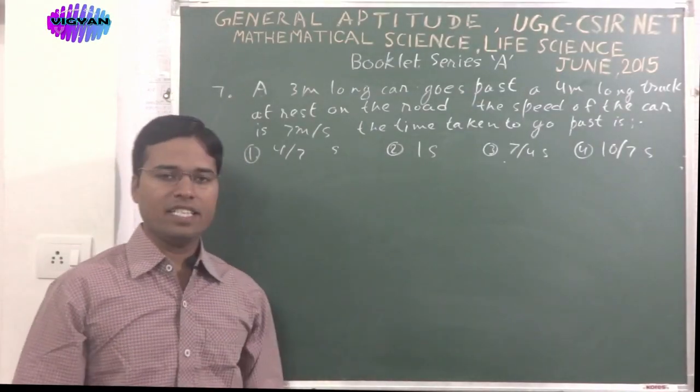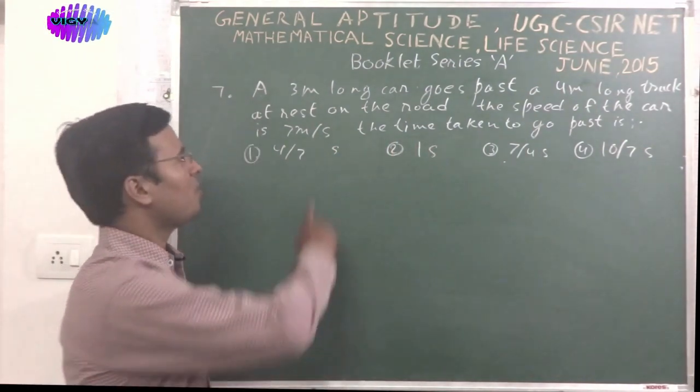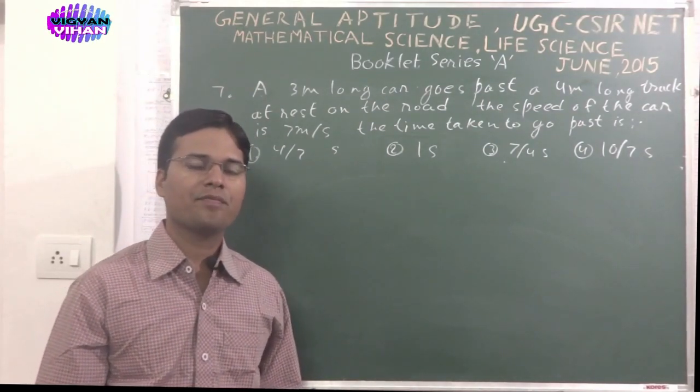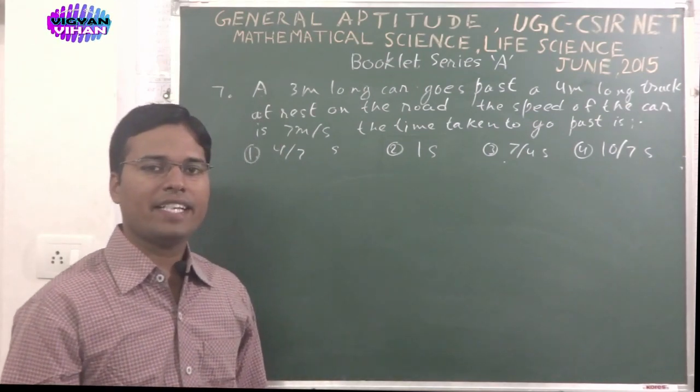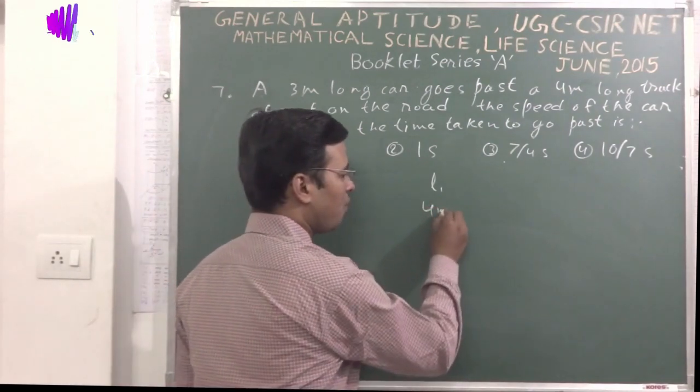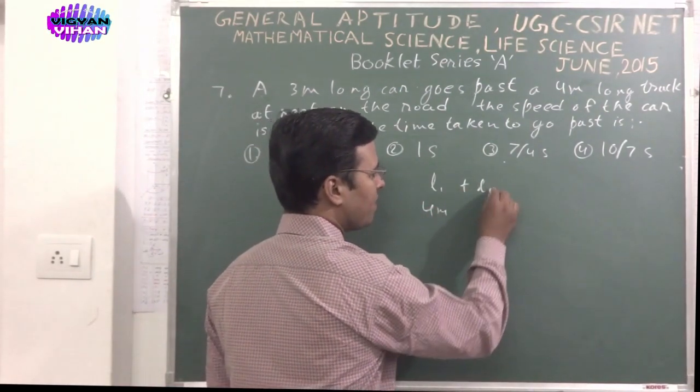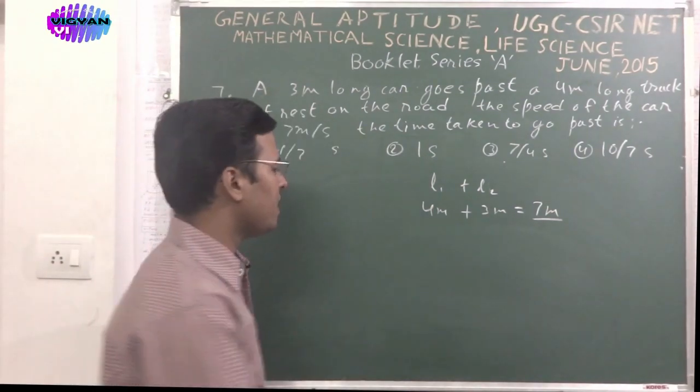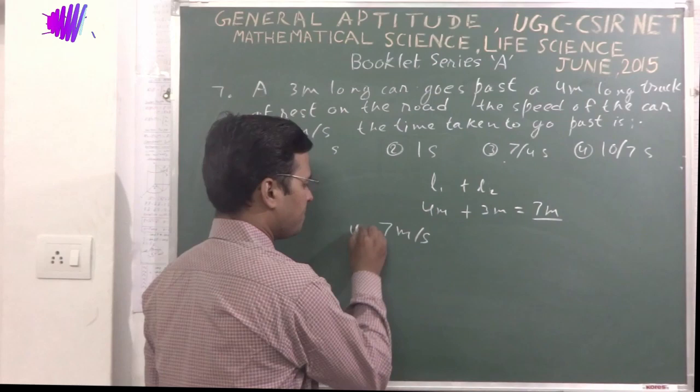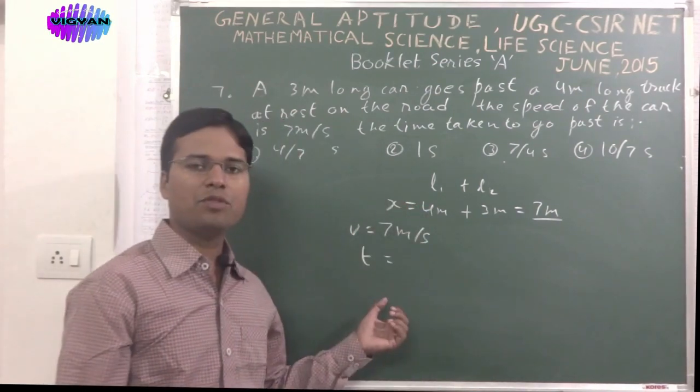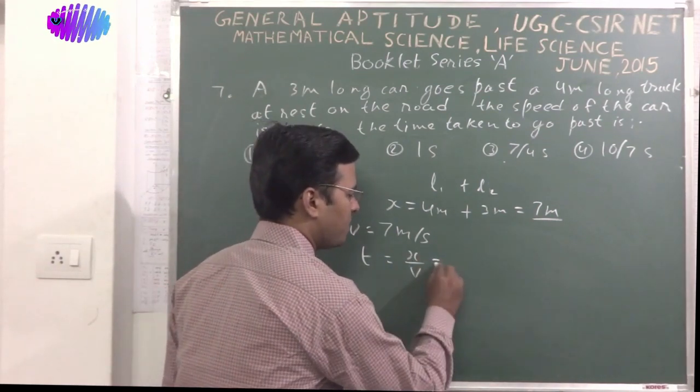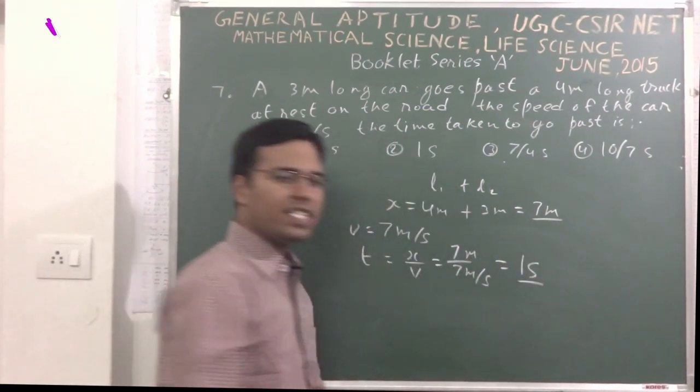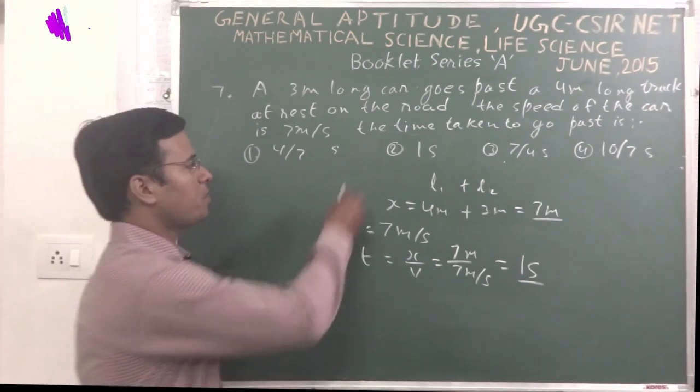In this problem, a car is going past a 4 meter long truck. The length of the car is 3 meter. Then we would have to calculate the time required to cross the truck. The total distance which is required to cover by the car is the length of the truck which is 4 meter plus length of the car which is 3 meter. So the total distance is 7 meter. The speed of the car is given as 7 meter per second. The time to cross the truck is distance upon speed. The distance here is 7 meter divided by 7 meter per second. So 1 second.